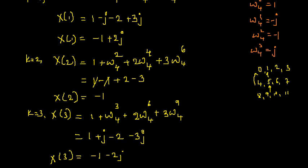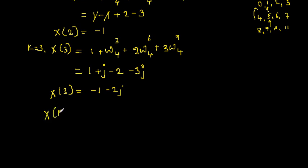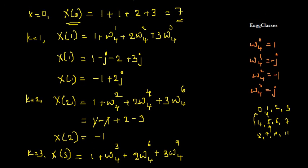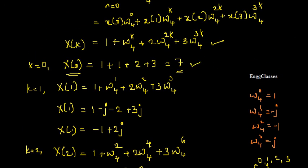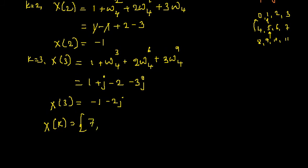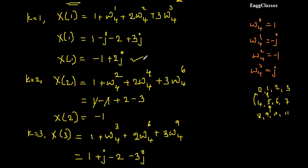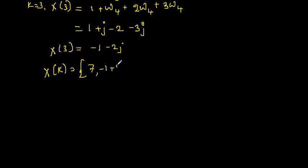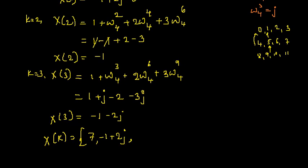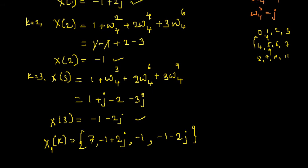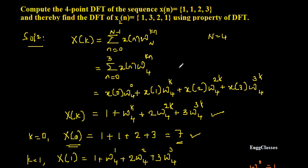Summing up, the four point DFT X1(k) is: X1(0) = 7, X1(1) = minus 1 plus 2j, X1(2) = minus 1, and X1(3) = minus 1 minus 2j. This completes the first part of the problem. The second part requires finding the DFT of x2 of n equal to 1, 3, 2, 1 using a property of DFT.